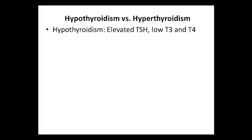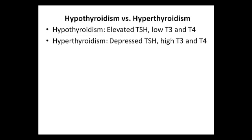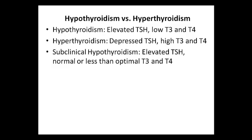So that you can better understand these three markers, I'd like to discuss the difference between hypothyroidism and hyperthyroidism. With overt hypothyroidism, you will have an elevated TSH along with a low T3 and T4. With hyperthyroidism, you will have a depressed TSH along with high T3 and T4 levels. Many people with Hashimoto's thyroiditis have subclinical hypothyroidism, where they have an elevated TSH but both of their thyroid hormone levels are within the normal reference range, although they might be less than optimal.